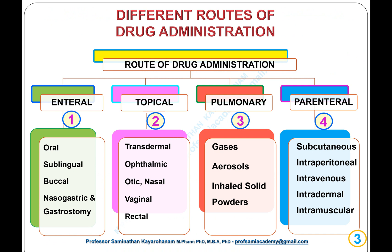(2) Topical route — for example, transdermal, ophthalmic, otic, nasal, vaginal, and rectal. (3) Pulmonary route — for example, gases, aerosols, and inhaled solid powders. (4) Parenteral route — for example, subcutaneous, intraperitoneal, intravenous, intradermal, and intramuscular.